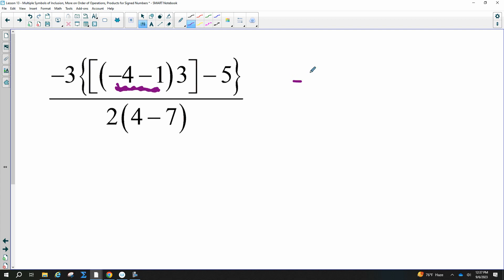So I have a negative 3, squiggly bracket, bracket. Alright, everyone, what's negative 4 minus 1? Negative 5. Should I get rid of these parentheses yet? No. You might get confused if you do. And then the 3, and then the bracket, and then the minus 5, and then this.